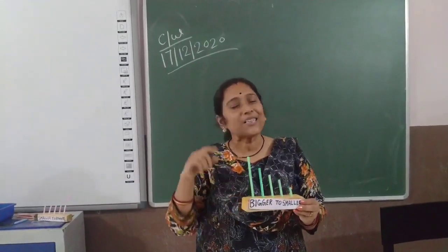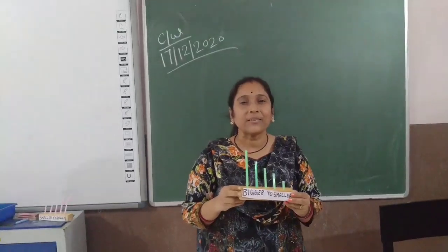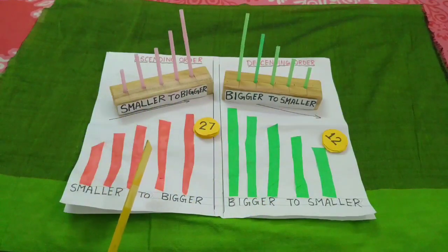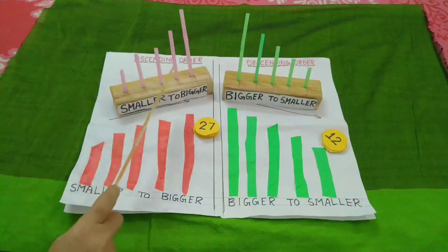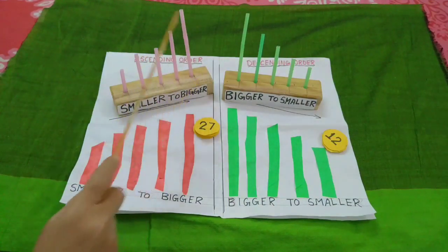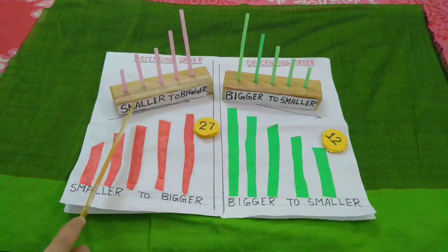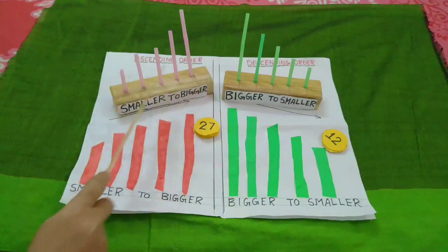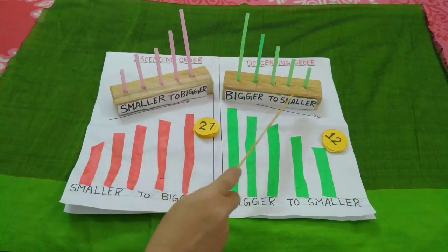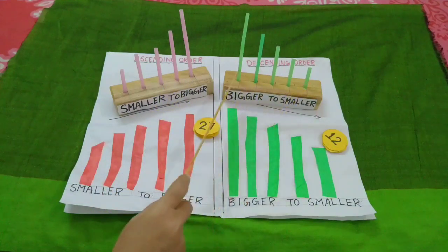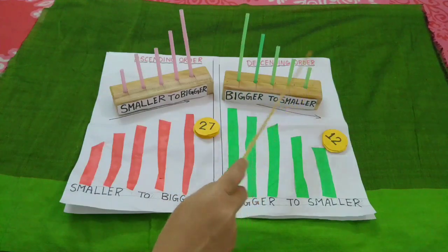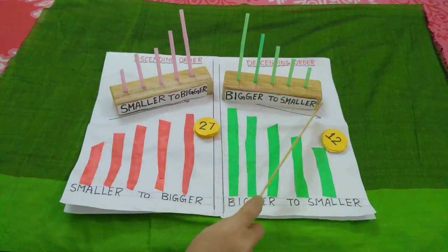So let's begin, my dear children. Here I have arranged some straws in ascending order — means smaller to bigger. And here also I have arranged some straws in descending order, means bigger to smaller.